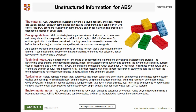One particularly useful field is typical uses. One of the tools in the software is the ability to search — to find records by searching — and one of the things you can search on is typical use. So a search on 'safety helmets', which is listed there, would find ABS and possibly other materials as well. And here are environmental notes at the bottom.